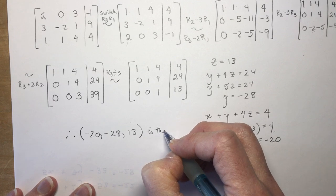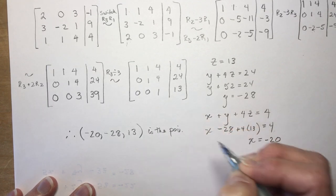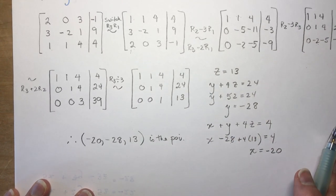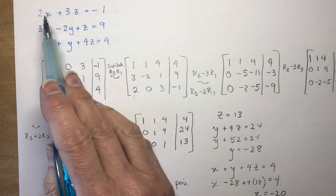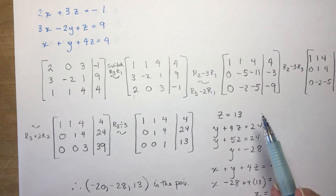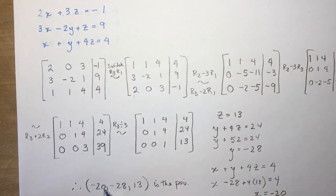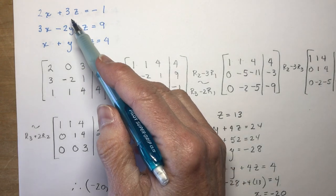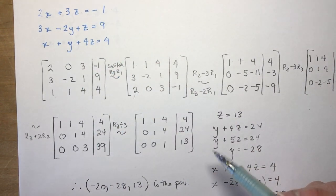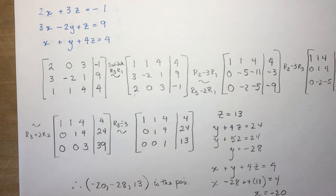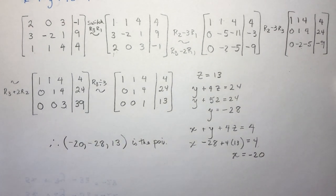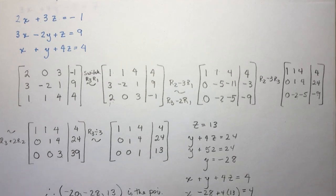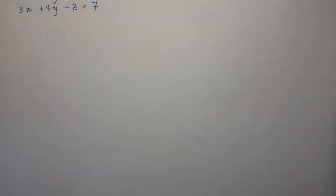You can double-check your answer by substituting these numbers back into the original equations. For example, x is minus 20, so 2 times minus 20 is minus 40; minus 40 plus 39 is minus 1, which checks out. Now for the last example, I have 2x plus y minus 2z equals 4.